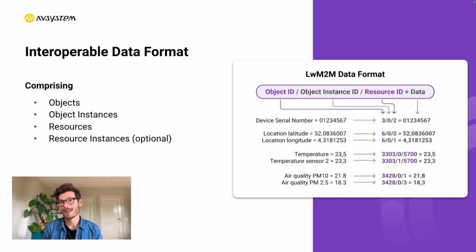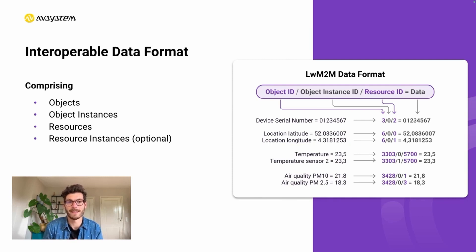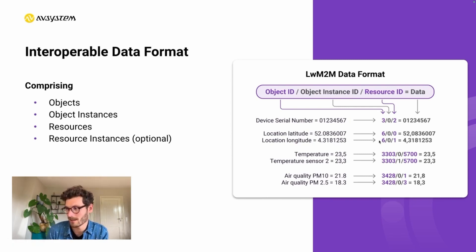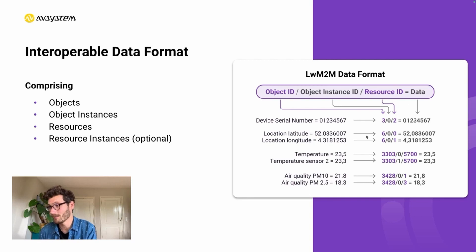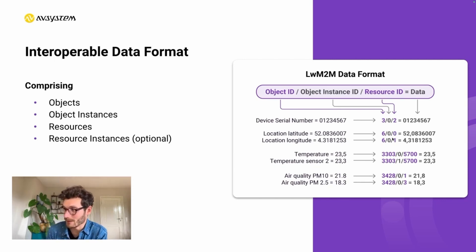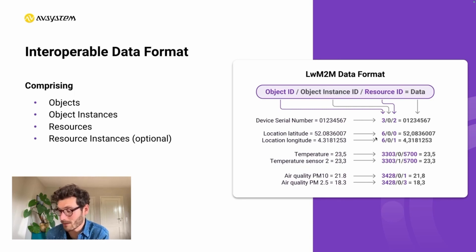So why is this important? Well, there's a clear format on how to report data. When sending a message, we first say what kind of data we're sending before sending the actual data. This standardized way of structuring data makes it very easy for cloud services to read and process data. Going back to the GPS sensor example, we have the URI of 6/0/0 — where six is the object ID for location, zero is the object instance since we only have one, and resource ID zero relates to latitude while resource ID one relates to longitude. So we start with 6/0/0 and then follow with the latitude data, informing the server what kind of data we're sending.